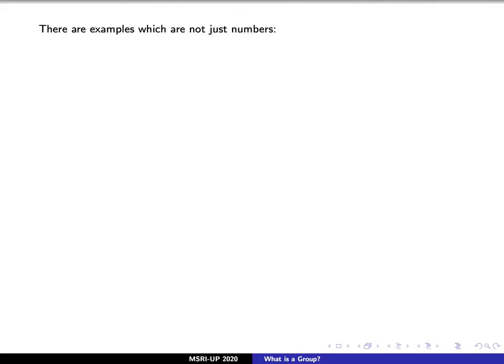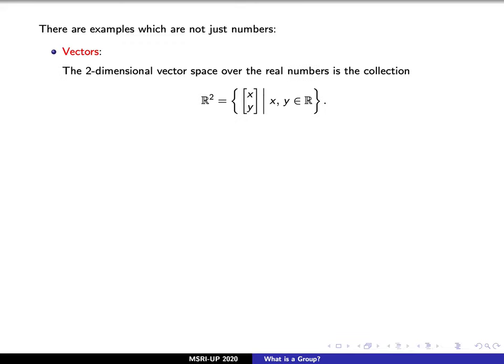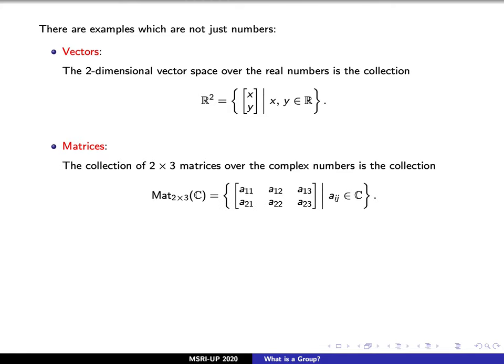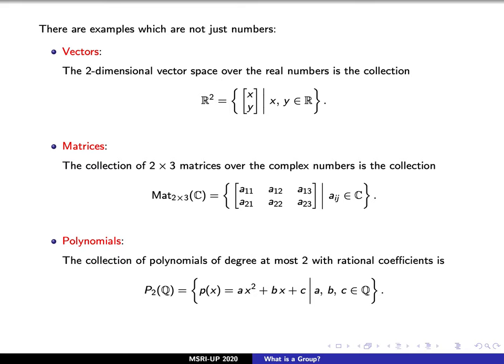But there are examples of sets which don't just include numbers. If you've taken linear algebra, you probably have seen vectors. For example, a two-dimensional vector space over the real numbers will be this collection here. Here you can see that we have this vertical strip x comma y, where x and y are real numbers. We might also want to consider matrices. In this example, you can see that we have a collection of two by three matrices, that is, you have an array with two rows and three columns. The entries here, which we're denoting by a_ij, will each be a complex number. Or we might even consider polynomials. In this example, we're considering polynomials of degree at most two, that is, functions of the form ax squared plus bx plus c, where a, b, and c are rational coefficients.